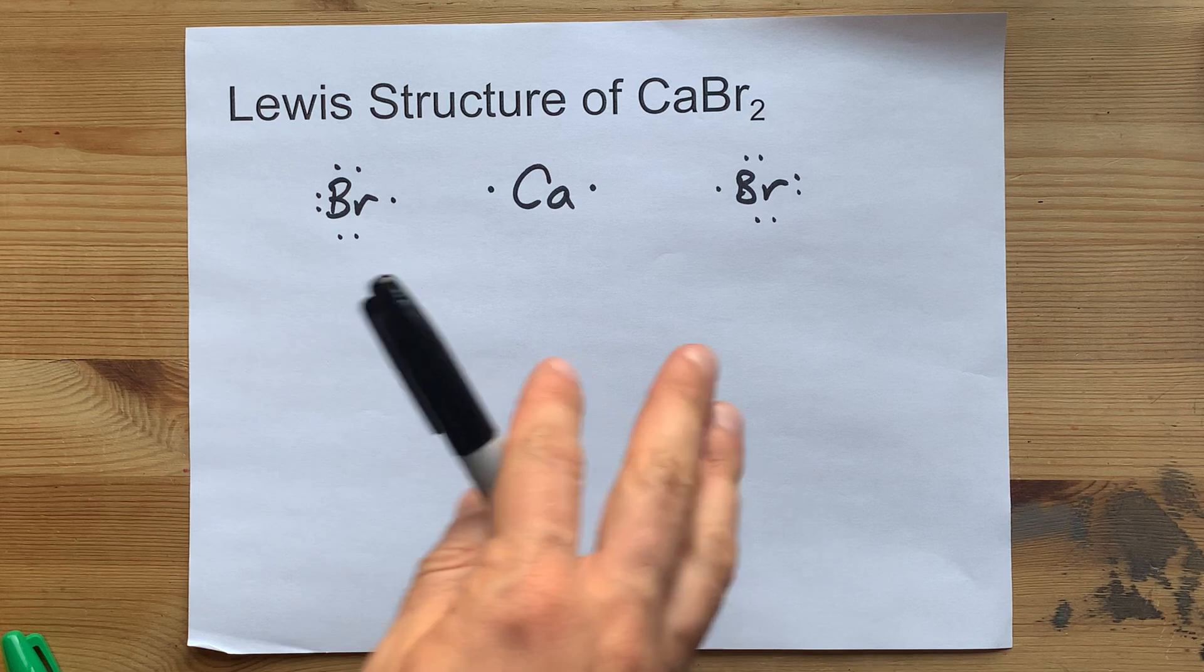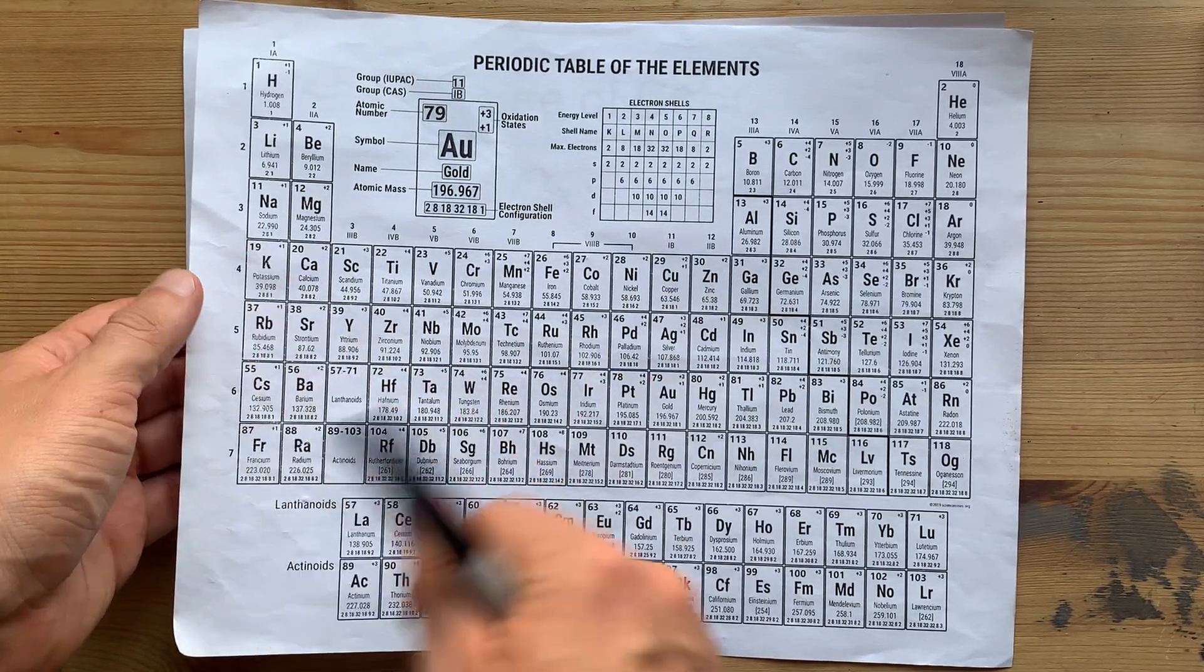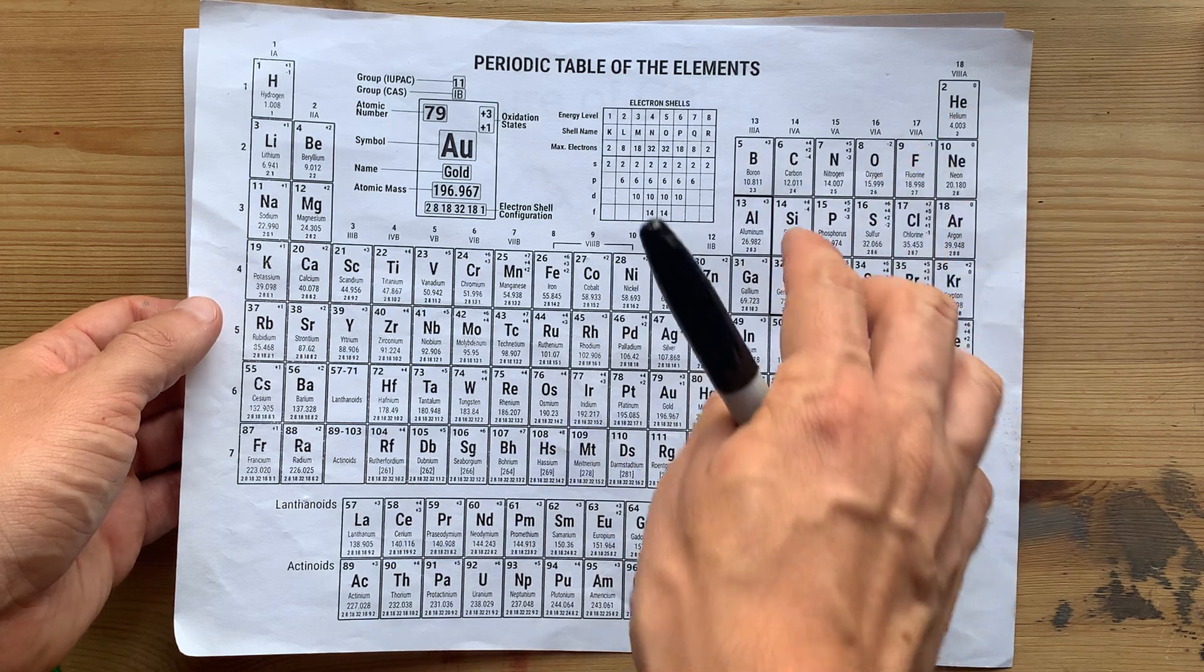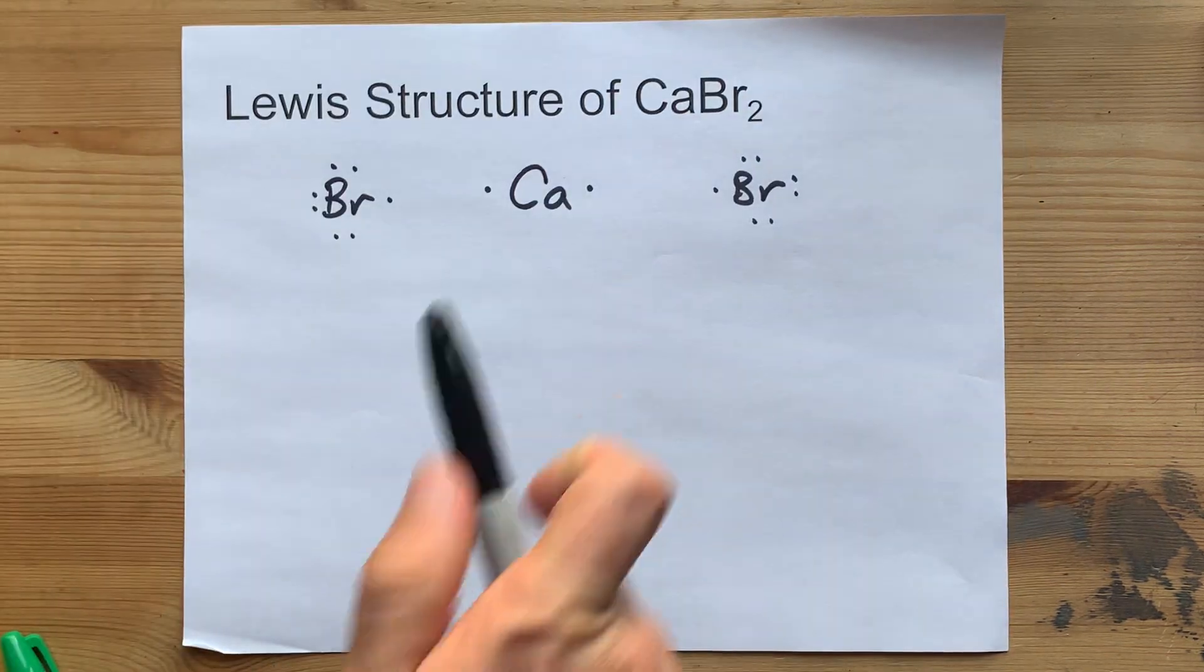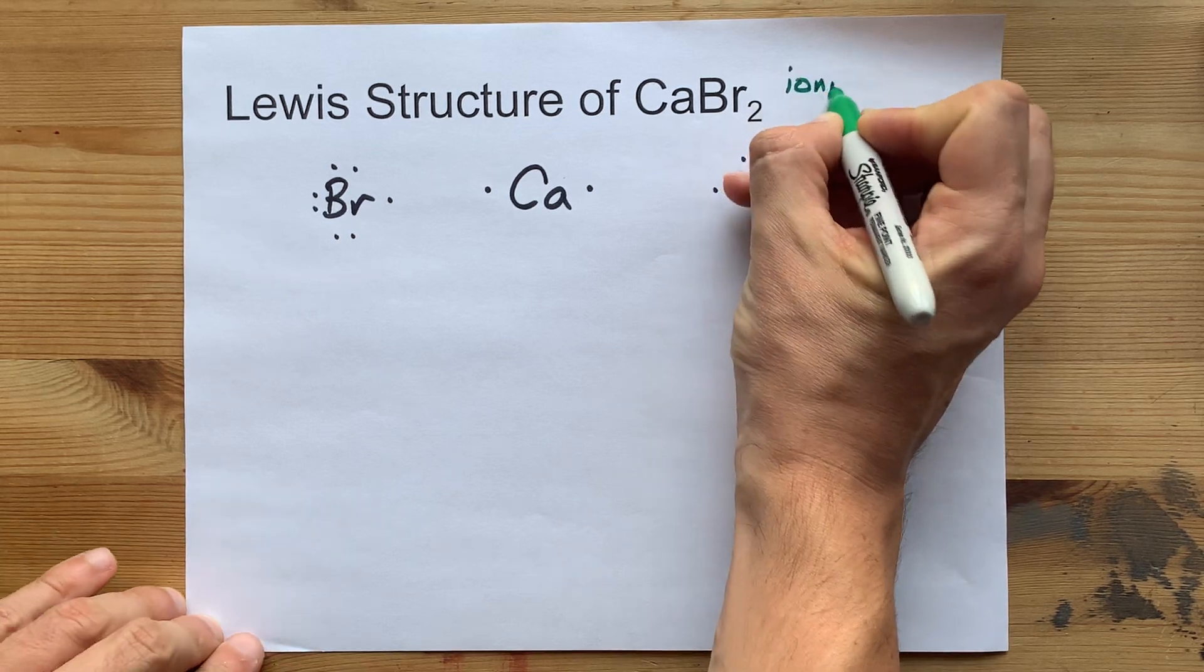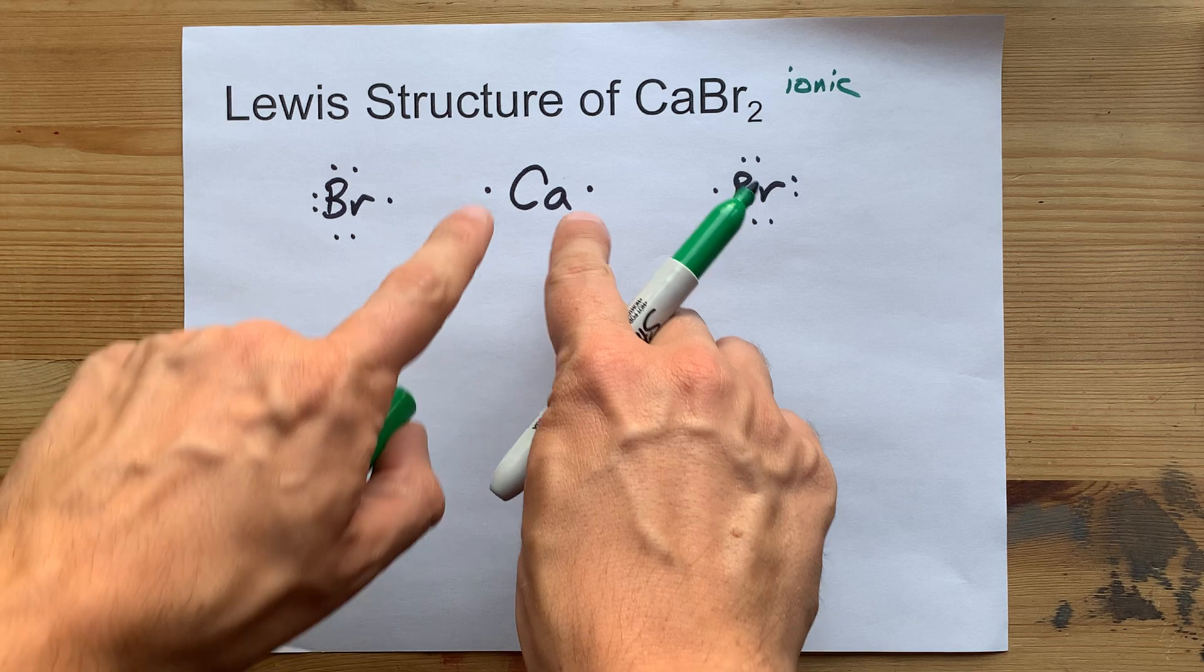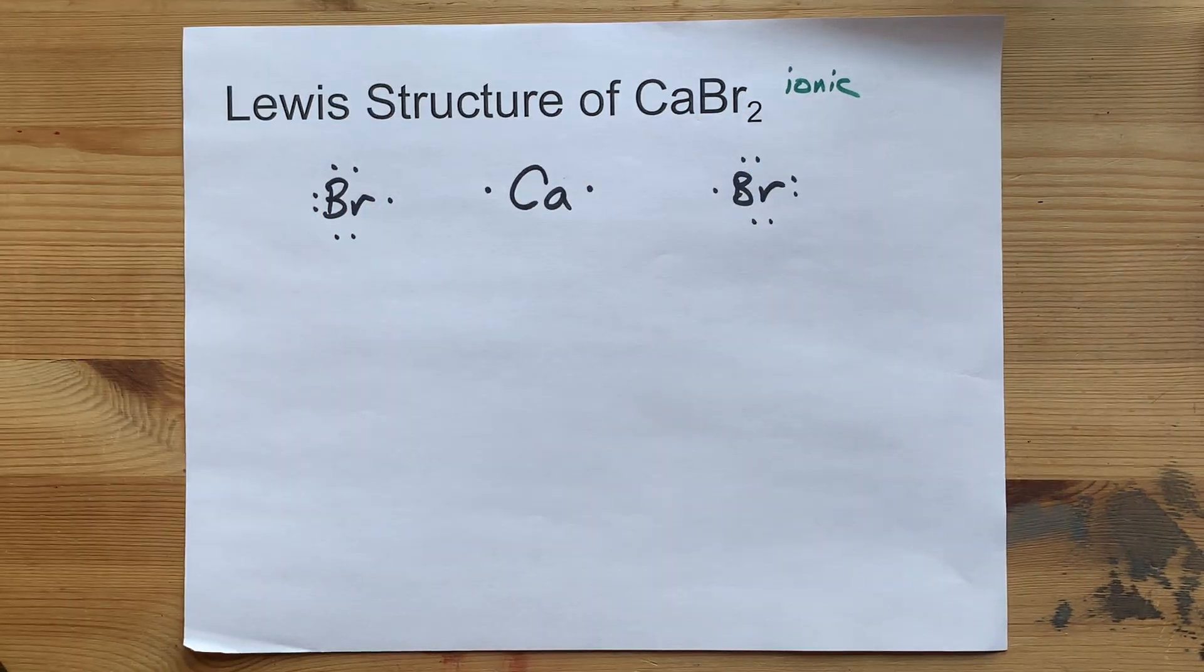Now, I want to emphasize calcium comes from the left side of the periodic table. It's a metal. Bromine is on the right-hand side of the staircase. It's a non-metal. This is going to be an ionic compound, metal plus non-metal, so the metal is going to give away its electrons entirely.